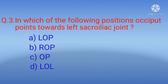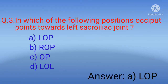Question 3: In which of the following positions does the occiput point towards the left sacroiliac joint? Options: A) LOP, B) ROP, C) OP, D) LOL. The correct option is A) LOP. LOP means left occipital posterior; ROP means right occipital posterior; OP means occipital posterior; LOL means left occipital lateral.